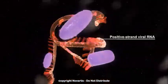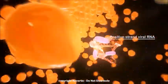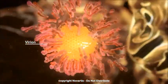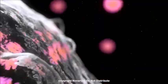The viral RNA is then packaged to form new HCV virions. The virions mature in the Golgi apparatus and are released from the host cell by exocytosis.